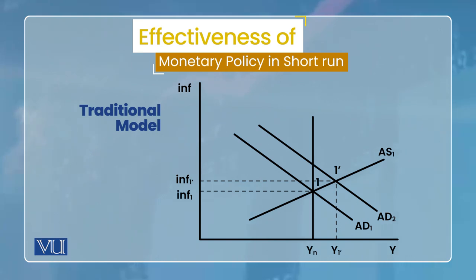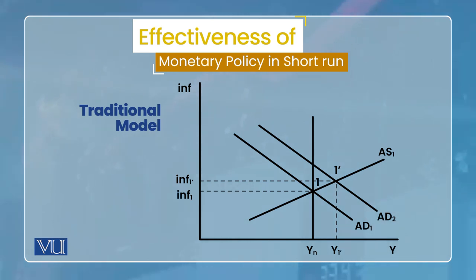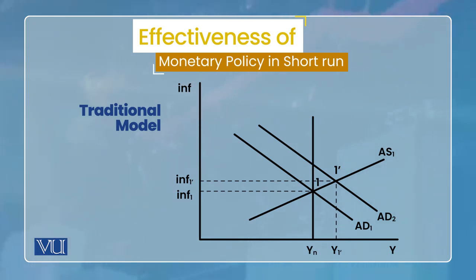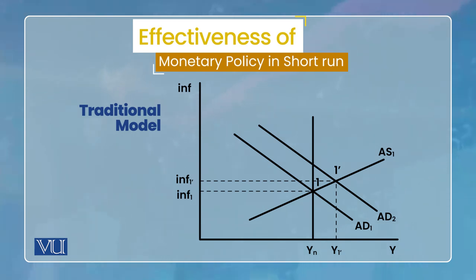Now let us see the effect of monetary policy in the traditional model. Suppose there is an expansionary demand shock, due to which the aggregate demand curve shifts to the right to AD2. Since expectations are adaptive, people's inflation expectations will not adjust in response to this aggregate demand shift, so the new short-run equilibrium will be at point 1 prime.